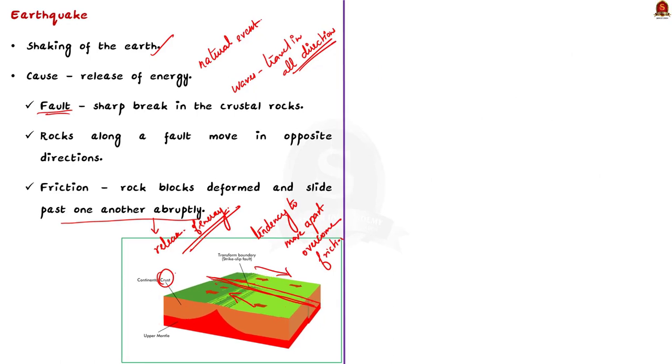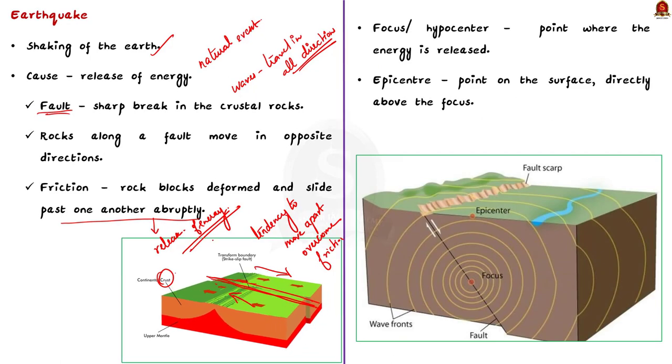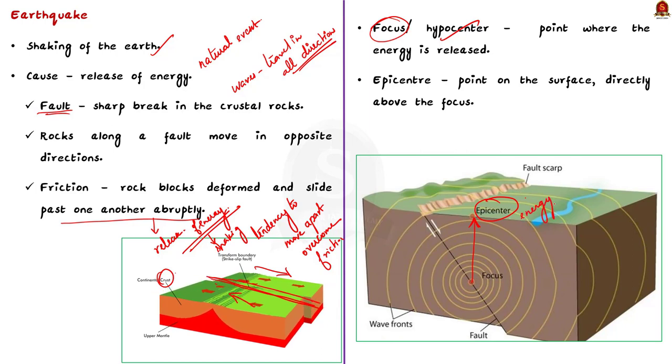Know that the point where the energy is released is called the focus of an earthquake. And it is also called the hypocenter. The energy waves traveling in different directions reach the surface. The point on the surface that is nearest to the focus is called the epicenter. The epicenter is the first one to experience the energy waves and it is a point directly above the focus.